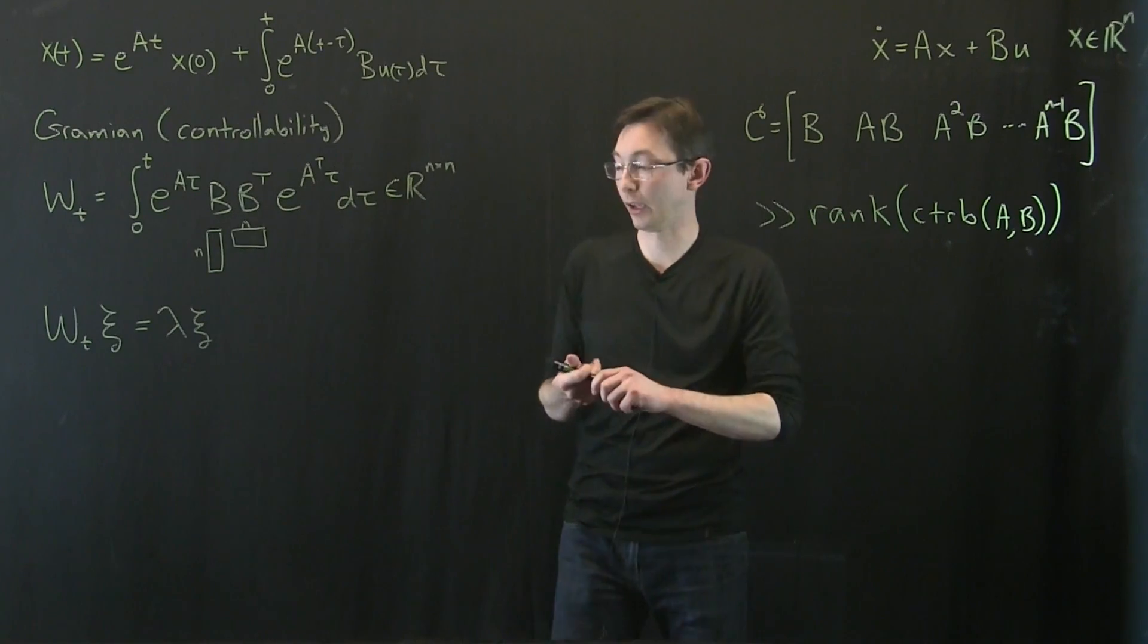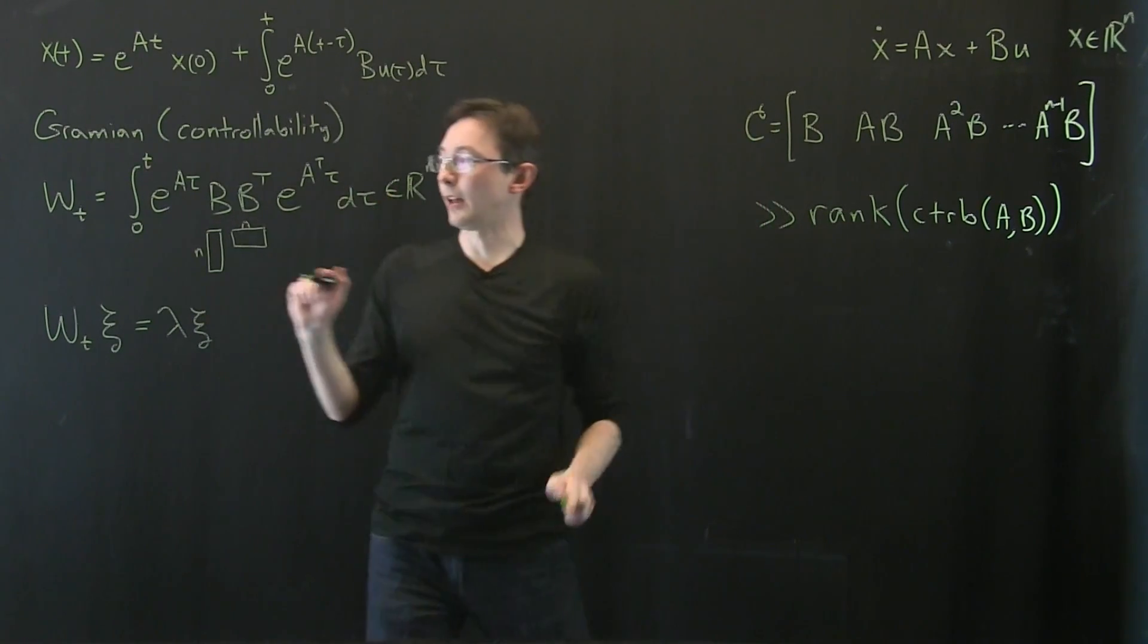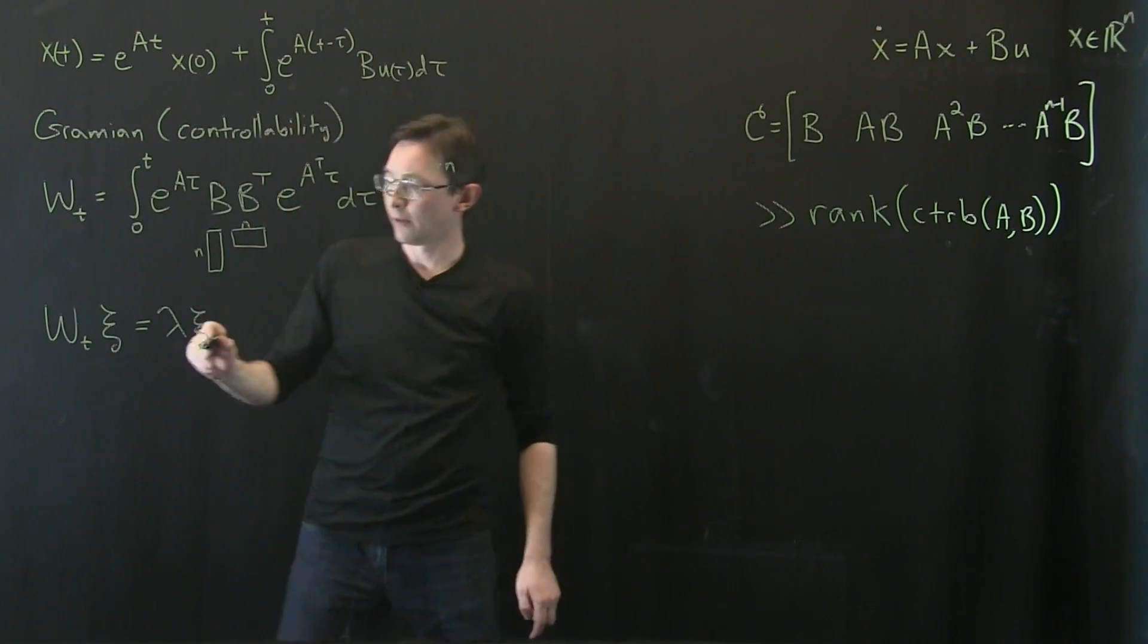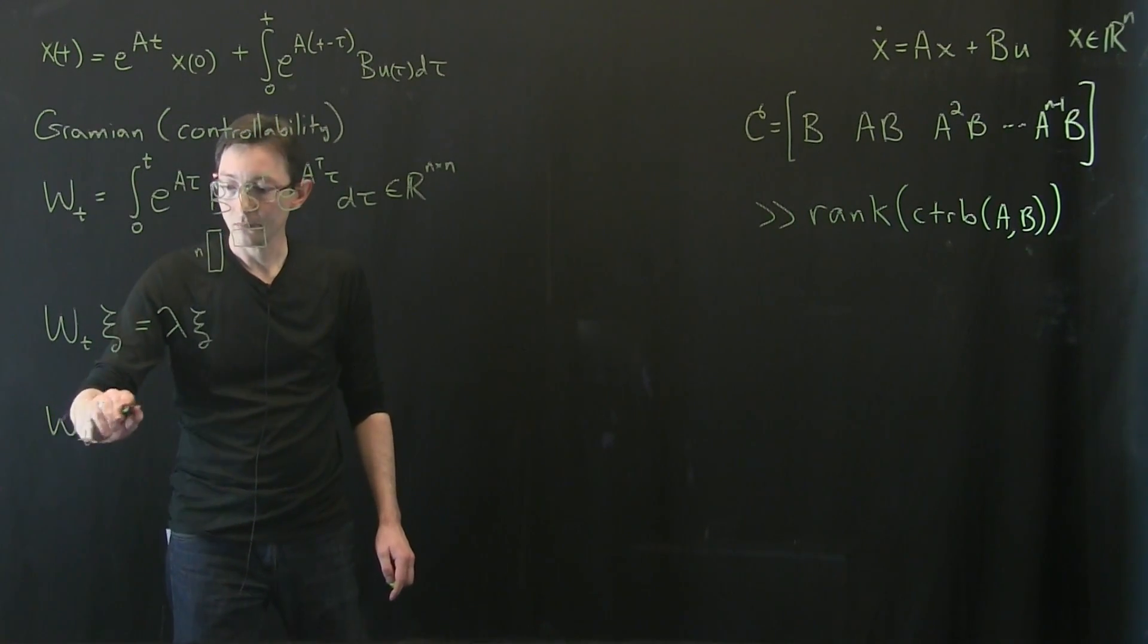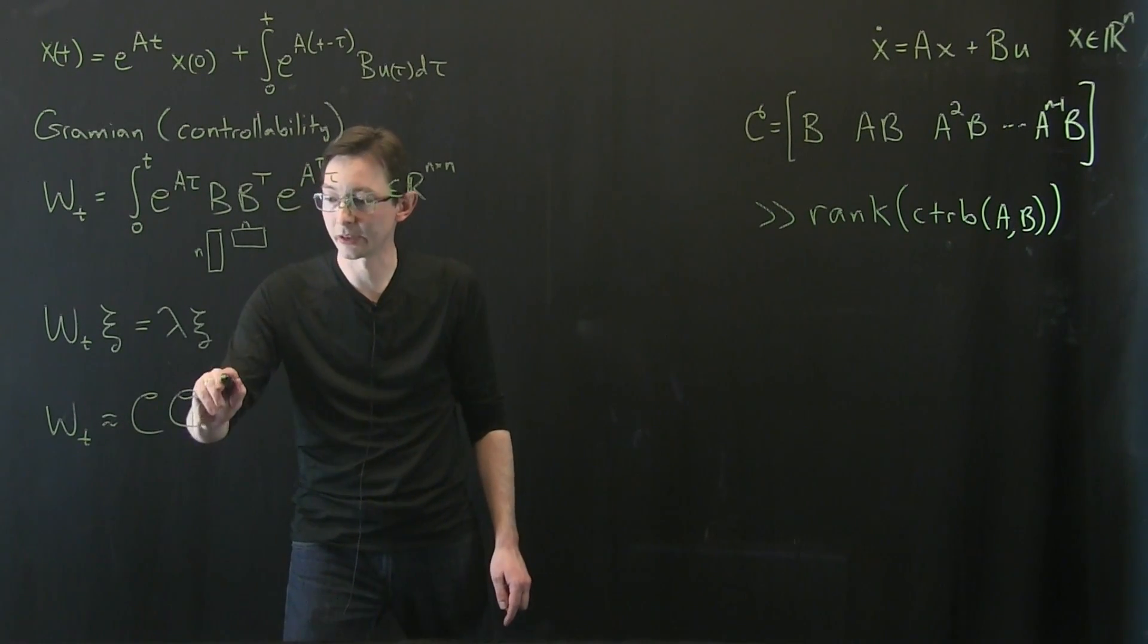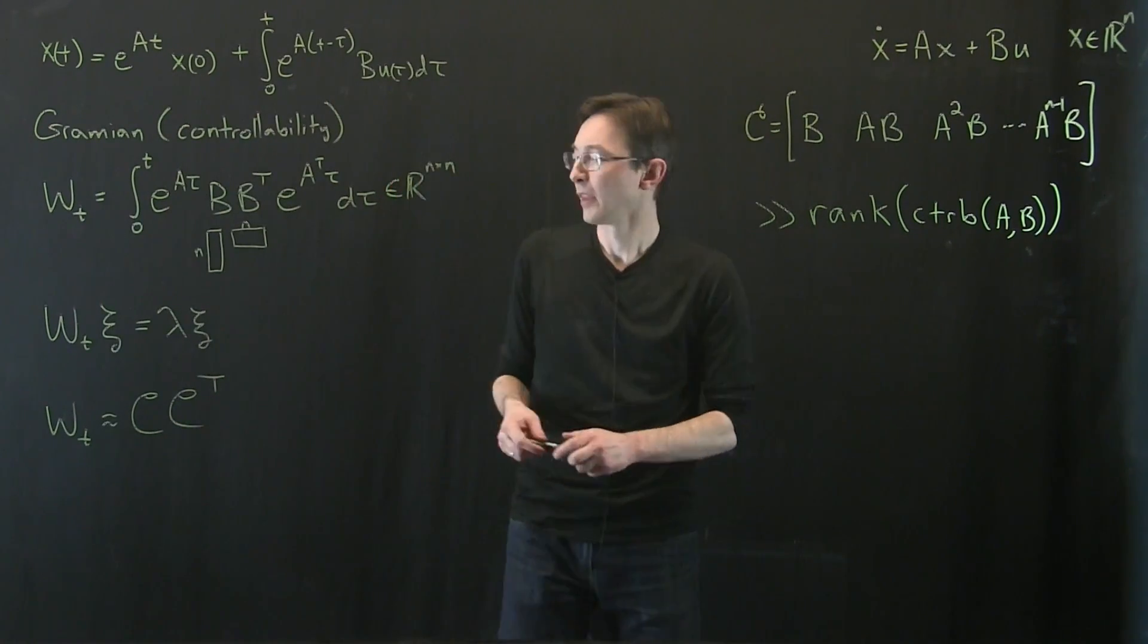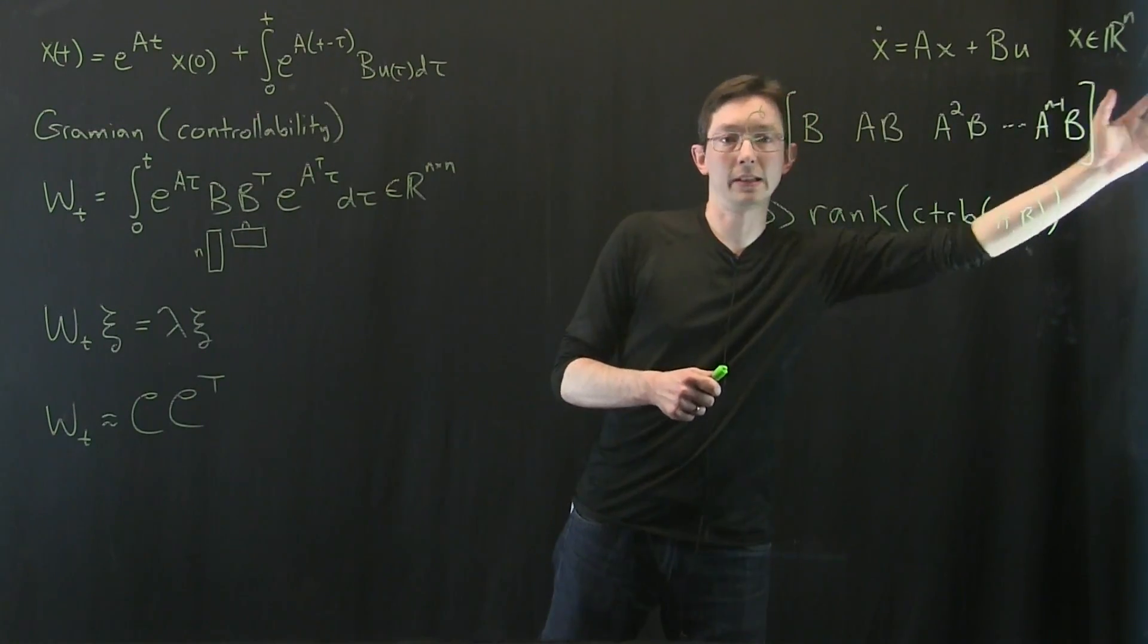Or let's say that I have a gallon of gas of input energy, I can go farther in the directions with bigger lambda than I can in the directions with smaller lambda. This is really cool. And so in lots of circumstances, I haven't told you why that's true or how you would compute this. For discrete time systems, oftentimes this is approximately equal to this controllability matrix times the controllability matrix transpose.